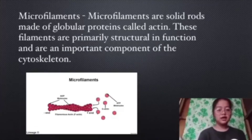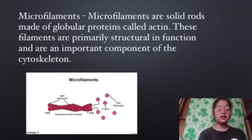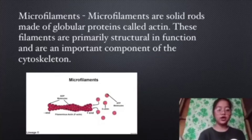Microfilaments. Microfilaments are solid rods made of the globular protein called actin. These filaments are primarily structural in function and are an important component of the cytoskeleton.